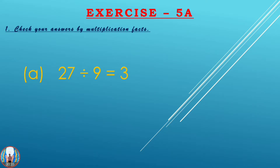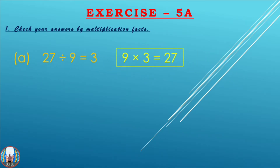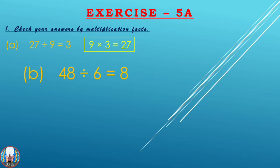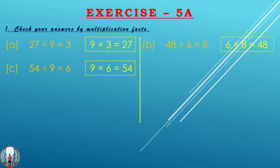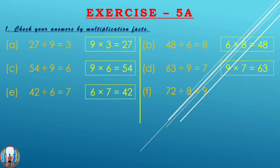To find out if our answer is correct, we multiply the two smaller numbers, that is 9 and 3. So 9 threes are 27 — we get the same number, so our answer is correct. In the same way for the second question: 48 divided by 6 equals 8. We multiply 6 and 8 because these are the two smaller numbers and we get the same number, so our answer is correct. If we get the same number, our answer is correct.